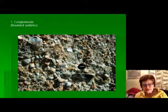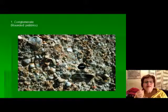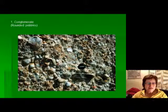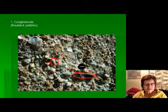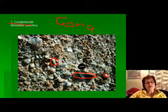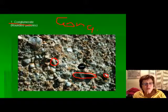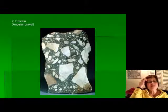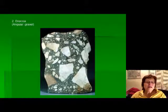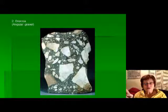Starting with the largest grain size — larger than 2 millimeters — there are two types. When the grains are rounded, like rounded pebbles, we call it conglomerate. When the grains are larger than 2 millimeters but very angular, we call it breccia.